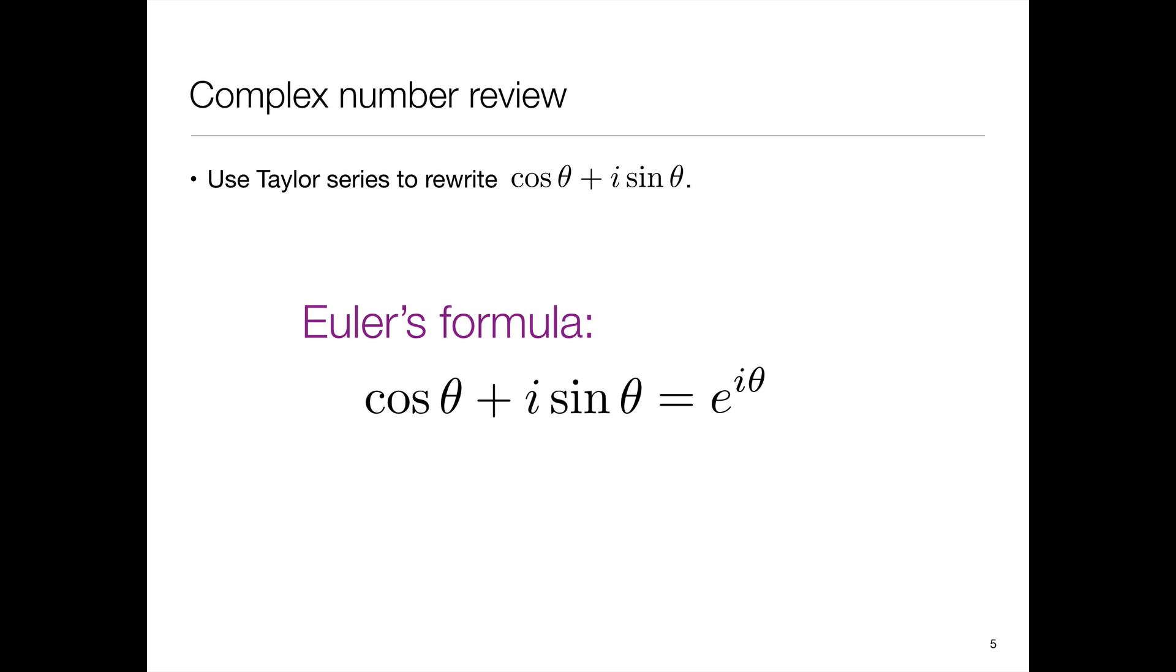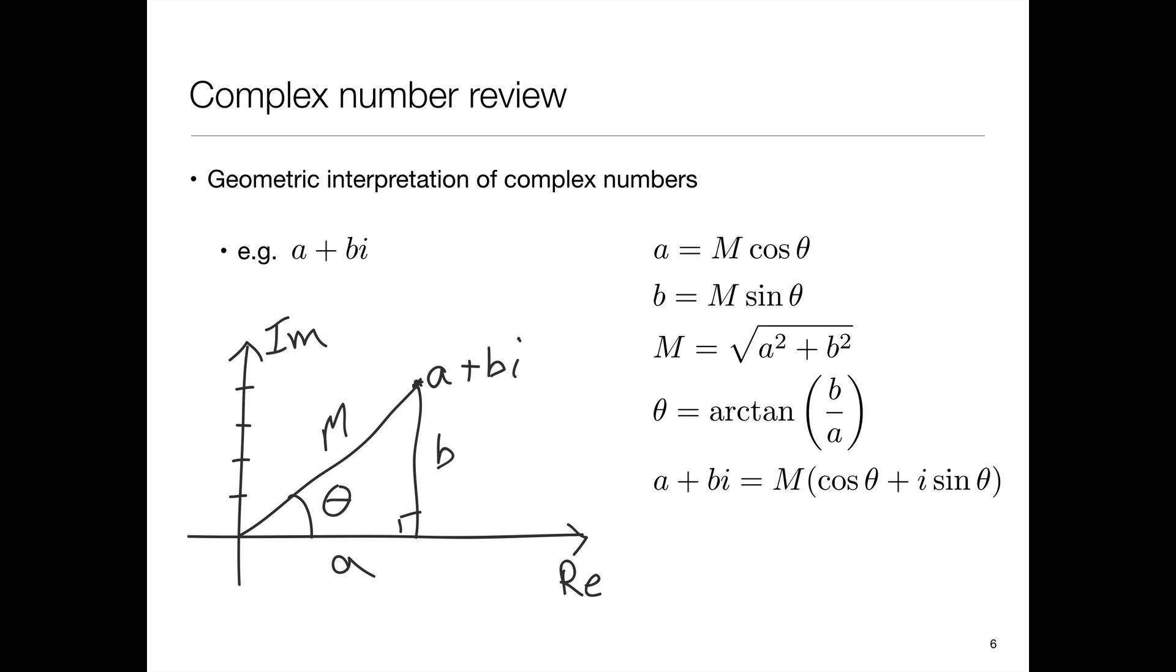This allows us to rewrite complex numbers instead of as a plus bi or cos theta plus i sine theta. We can write them in terms of the exponential function. So we can add to this list a plus bi is equal to m multiplied by e to the i theta.